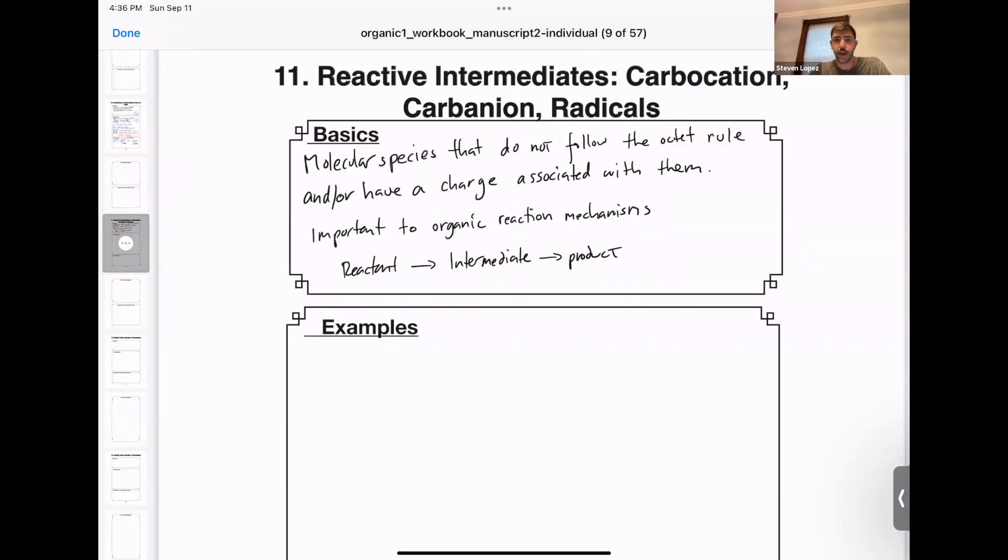We call them intermediates because sometimes reactions don't go directly from the reactant to the product. Sometimes they have kind of a rest stop in between them that we call an intermediate. And those intermediates can have the characteristics of a carbocation, a carbanion, or a radical.